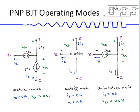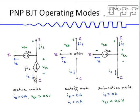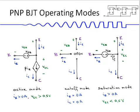Similar things happen for a PNP transistor but everything gets reversed — emitter, collector, and base polarities get reversed. The way it is drawn here is that the emitter goes to the top and the collector to the bottom, so that the current flow is in the same direction as for the NPN transistor. The same modes apply: cutoff mode acts like an open circuit, and saturation mode acts like a closed switch.